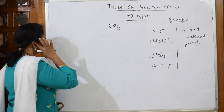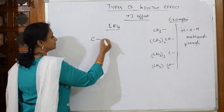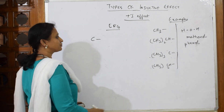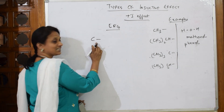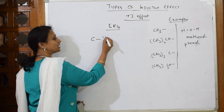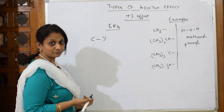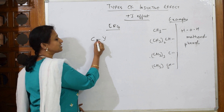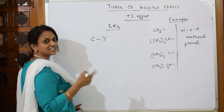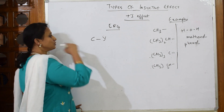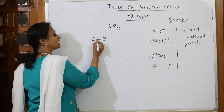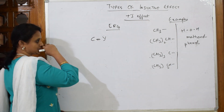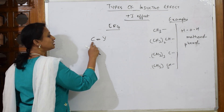So in +I effect, suppose I have a carbon chain. Instead of an electronegative atom, let me take Y. Among these, this is the electron releasing group. What does it do? It starts releasing electrons. To show this, I'll put the arrow towards the electron releasing group.